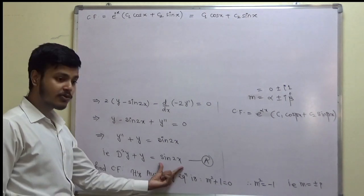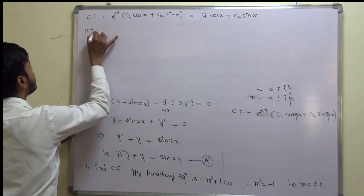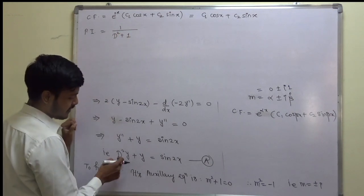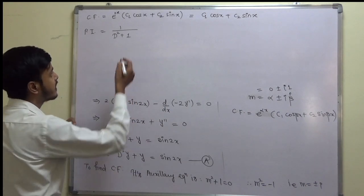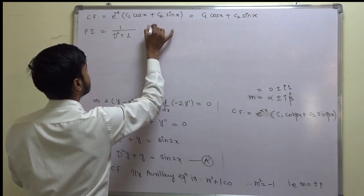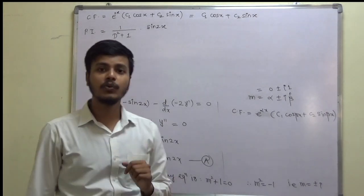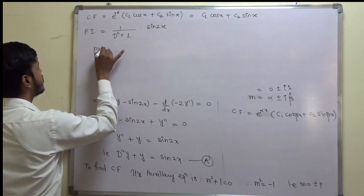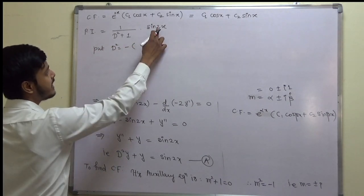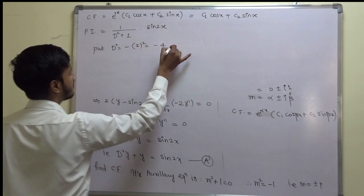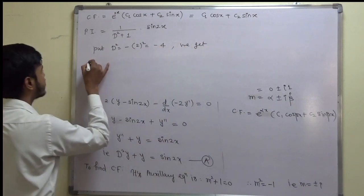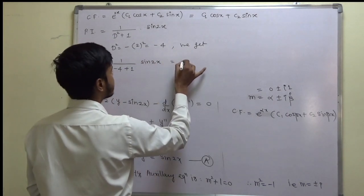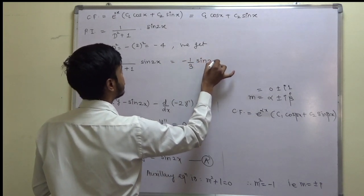Now we find the particular integral (PI). PI = 1/(D² + 1) · sin 2x. This falls under the second rule for particular integrals: for a sin or cos function, put D² = −a², where a = 2, so D² = −4. Therefore PI = 1/(−4 + 1) · sin 2x = 1/(−3) · sin 2x = −(1/3) sin 2x.